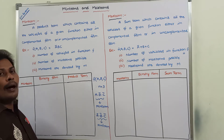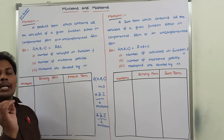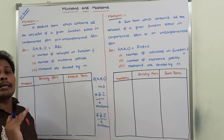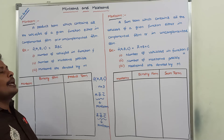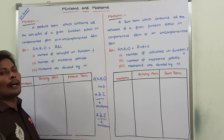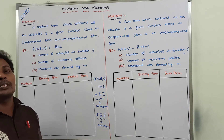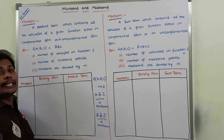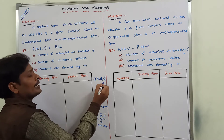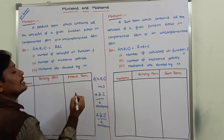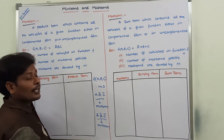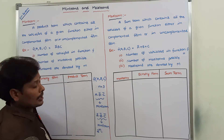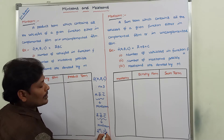So this is the definition of the min term — a product term which contains all the variables of a given function either in complemented form or in uncomplemented form. Now, how many number of min terms are possible? Suppose the given function contains 3 variables, then n is equal to 3. The number of min terms possible is 2 power n. So 2 power 3 equals 8, denoted m0 to m7.